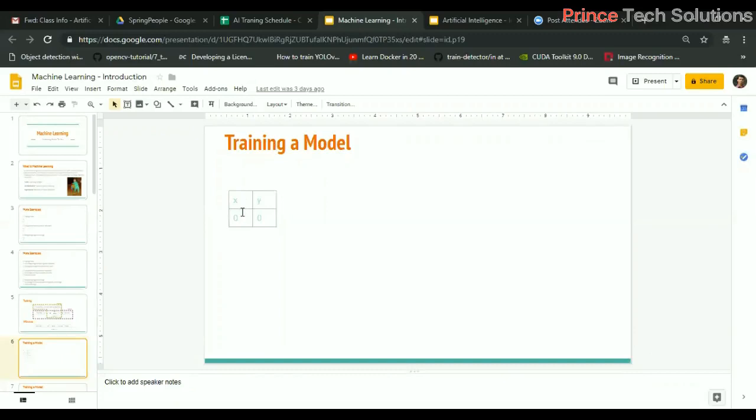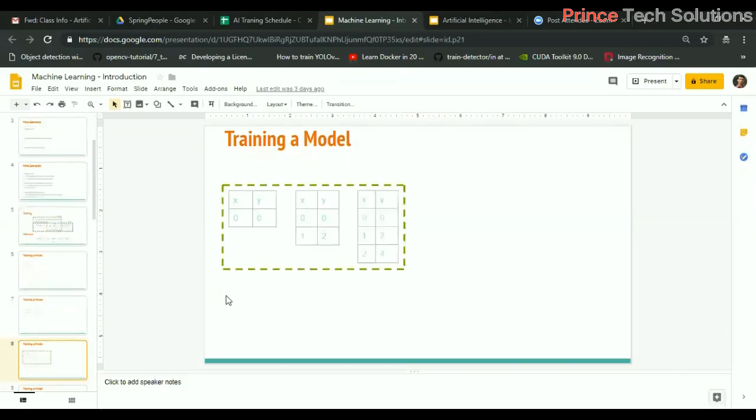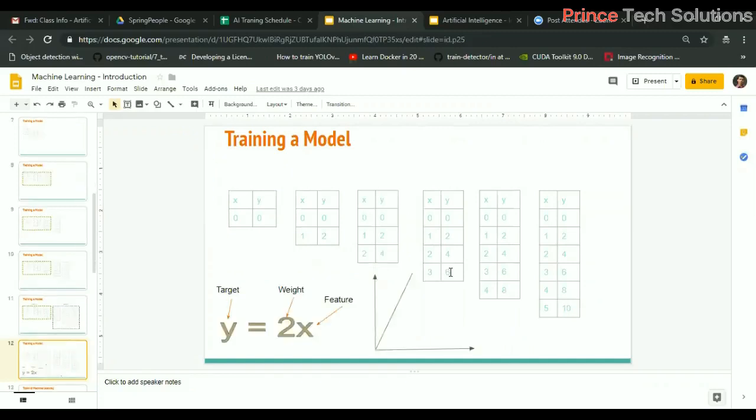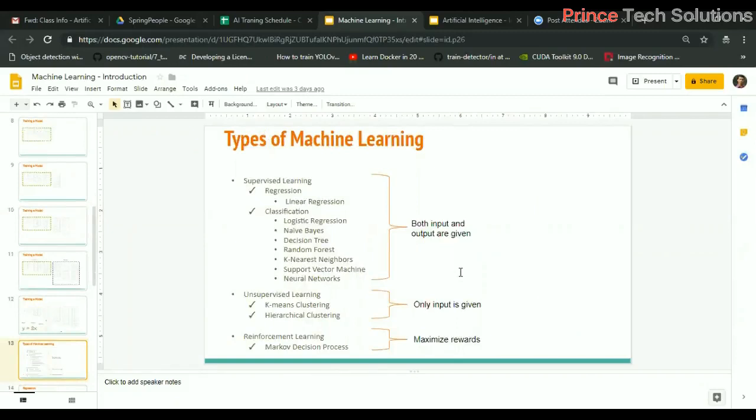Training a model means we have features and the target variable. In training, we train on the number of rows - the amount is very small like zero, and the value of y is zero, one, two, two, and four likewise. We test it over values like three. The model learned from this data is y equals two x. This is the model trained. These are the different types which you already know, like supervised learning.